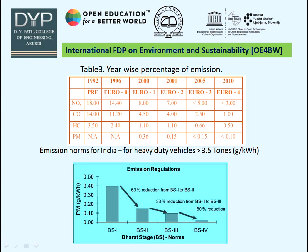Regarding emission regulation as per Bharat Stage standards: from BS1 to BS2 there will be a 63% reduction; from BS2 to BS3 there is a 33% reduction in particulate matter (PM) in grams per kilowatt-hour; and from BS3 to BS4 there is an 80% reduction of particulate matter PM.